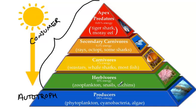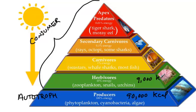You'll notice that the amount of energy in each level decreases as we rise. So let's say we start out with 90,000 kcal of energy — kcal is a unit of energy. Every level that we raise on the energy pyramid, we go down by 10%, so now we have 9,000 kcals. The zooplankton, the snails and the urchins — these herbivores which are eating the phytoplankton, cyanobacteria, and algae — don't have as much energy as the level below them. So there's 9,000 kcal in these.